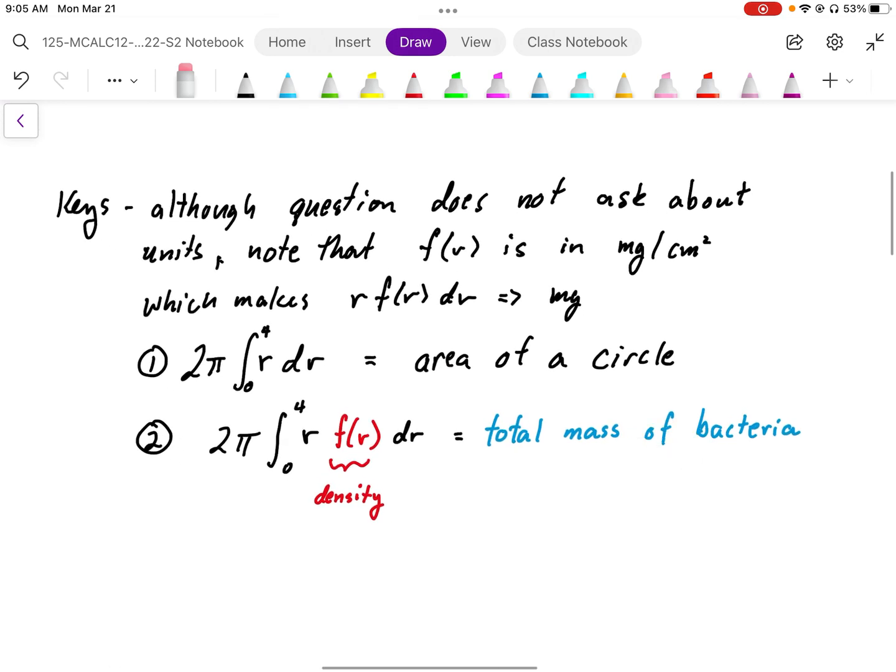Although it does not ask for the units, it's important to note that f(r) is the density in milligrams per centimeter squared, which makes r f(r) dr - r times dr gives a centimeter squared times the density f(r) - that gives us the milligrams.